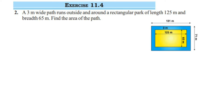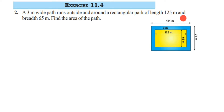Hey everyone, here is a question from exercise 11.4, second question, and this is the perimeter and area chapter of class 7. The question is: a 3 meter wide path runs outside and around a rectangular park of length 125 meter and breadth 65 meter. Find the area of the path. So this is the figure I have.